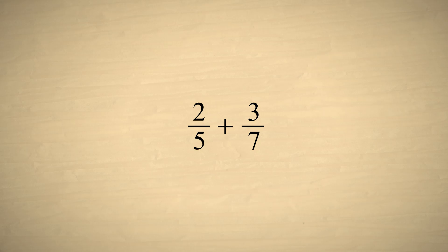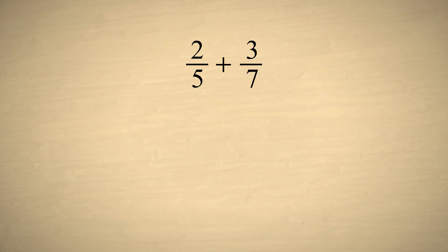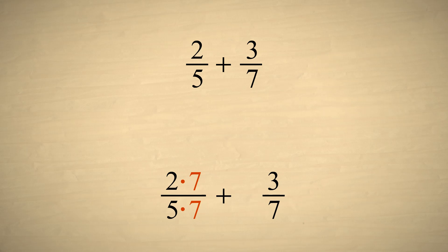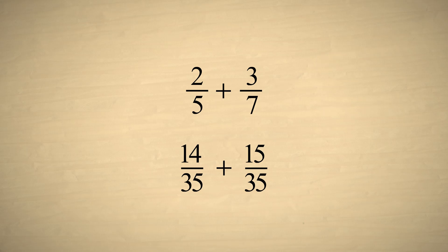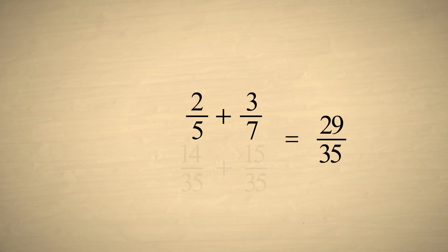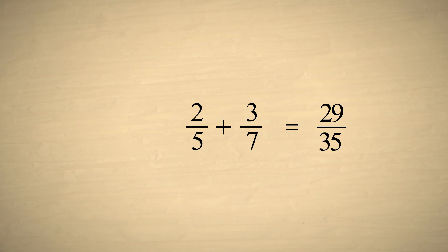Let's try another example: adding the fractions two-fifths and three-sevenths. To create the common denominator, we multiply the numerator and denominator of the fraction two-fifths by the denominator of three-sevenths, and we multiply the numerator and denominator of three-sevenths by the denominator of two-fifths. This gives us fourteen-thirty-fifths plus fifteen-thirty-fifths, and fourteen-thirty-fifths plus fifteen-thirty-fifths is twenty-nine-thirty-fifths. So two-fifths plus three-sevenths is twenty-nine-thirty-fifths.